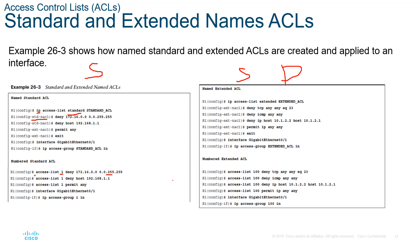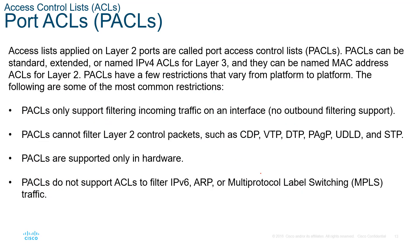Standard ACLs only do source; if you need to list a destination, it must be an extended ACL. For a named extended ACL: 'ip access-list extended [name]', then action, protocol, source, and destination using 'any', 'host', or the IP/wildcard form. For a numbered extended ACL: 'access-list [100–199] [action] [protocol] [source] [destination]'. These topics are a refresher from CCNA.